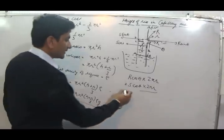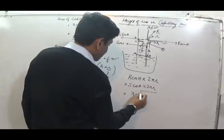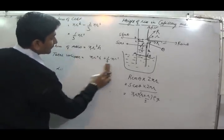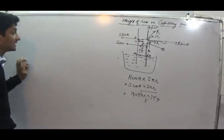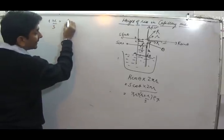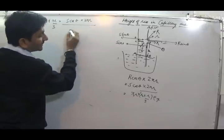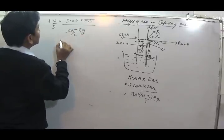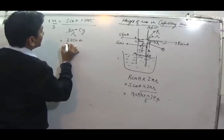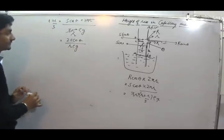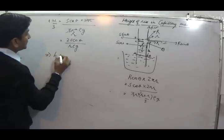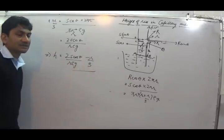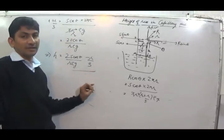This upward force should be equal to the weight of the liquid. So: s cos theta times 2 pi r equals pi r squared (h + r/3) rho g. Simplifying, h + r/3 equals 2s cos theta divided by (r rho g). Therefore, h equals 2s cos theta divided by (r rho g) minus r/3. This is the equation of ascent — the height of rise of liquid in a capillary tube.